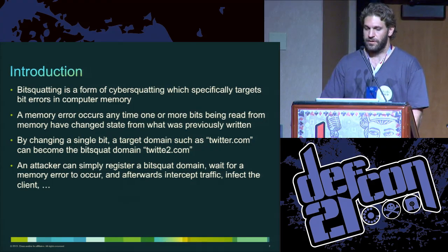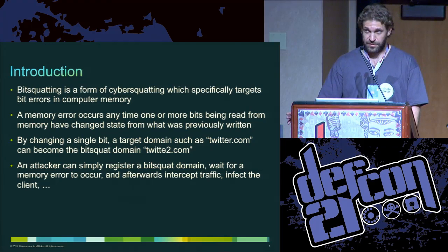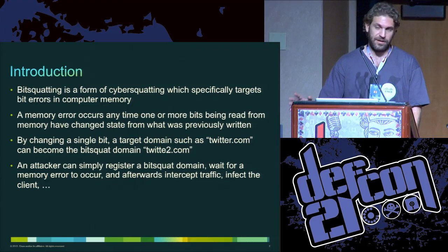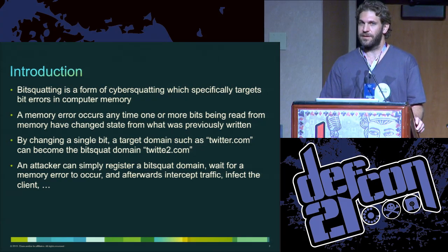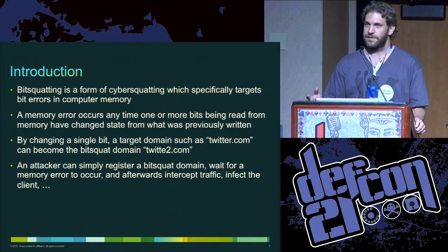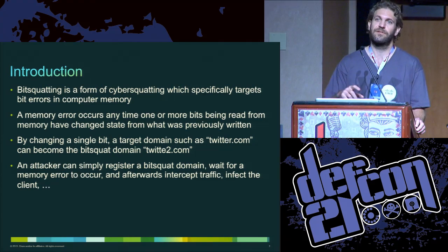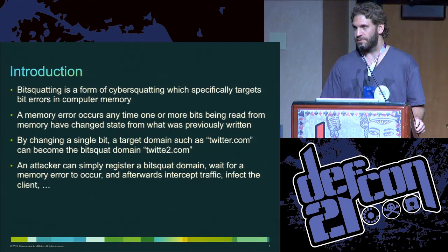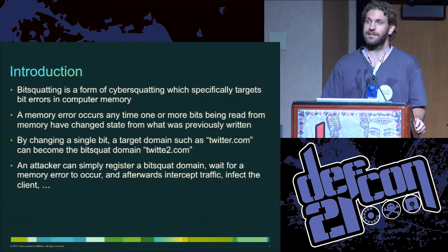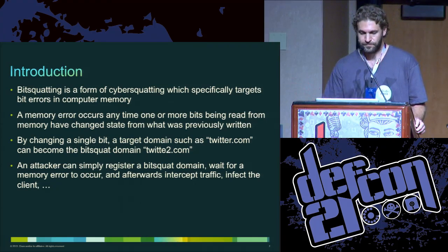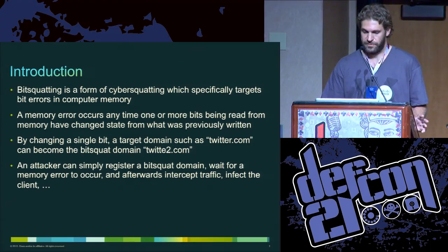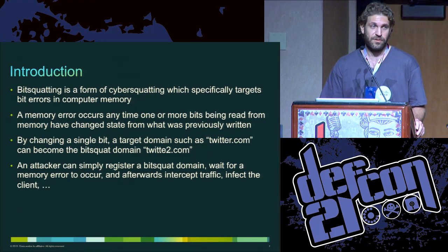If you know what typosquatting is, you'll be able to understand the concept of bit squatting — it's not a whole lot different. Where typosquatting is registering a domain name that is confusingly similar that somebody might mistype on a keyboard, bit squatting involves actually registering domain names that are one binary digit different. If you think about the way domain names are represented in the memory of a computer, most computers use ASCII, so there's a series of binary digits representing each character forming the domain name.